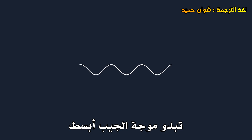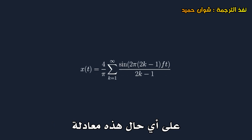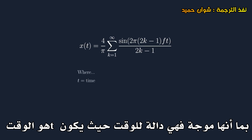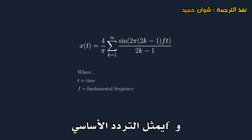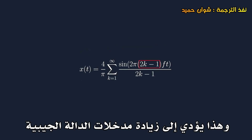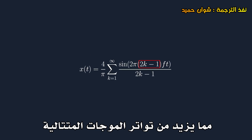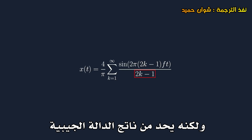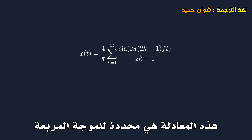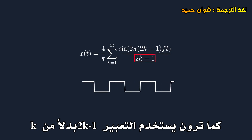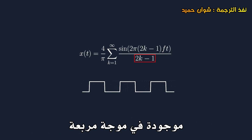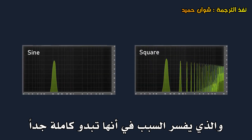First of all, the sine wave sounds the simplest, as it only represents one frequency. However, here's an equation that represents an infinite sum of waves. Since it's a wave, it's a function of time, with t being the time and f being the fundamental frequency. The sigma means that many copies of this expression are being added up with increasing values of k. This scales up the input of the sine function, increasing the frequency of successive waves, but scales down the output of the sine function, decreasing the amplitude of successive waves. This specific equation is for the square wave. As you can see, the expression uses 2k-1 instead of k, which gives all the odd integers. This means that all the odd harmonics are present in a square wave, in addition to the fundamental, which is why it sounds so full compared to the sine wave.